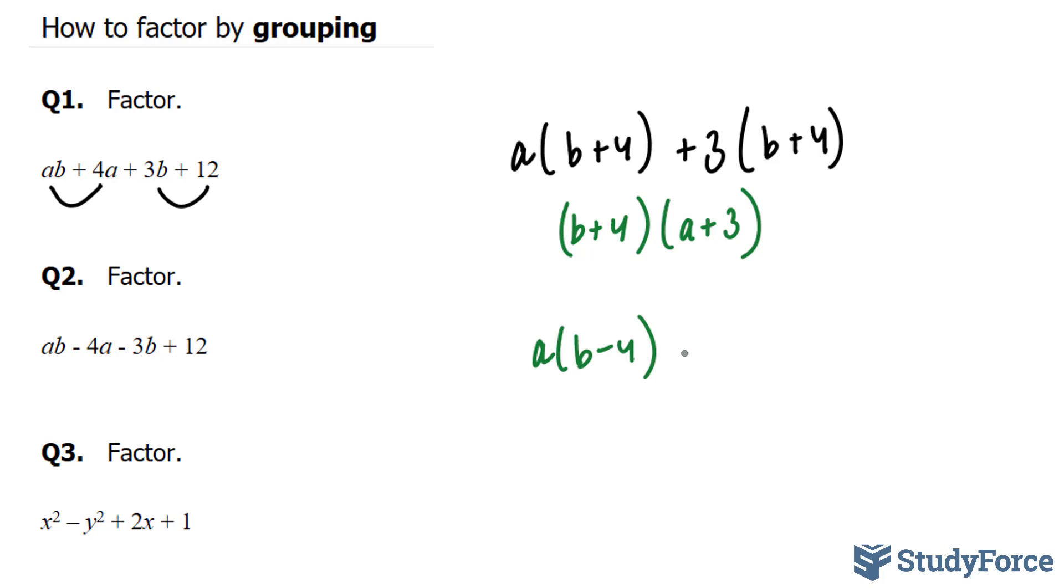And I'm going to factor out a minus 3 this time, leaving me with B minus 4. The reason why this B becomes positive is because if I left it as negative, that would mean that this term, which is currently negative 3B, is positive 3B. So when you pull out a negative factor, be mindful of the terms remaining within the brackets.